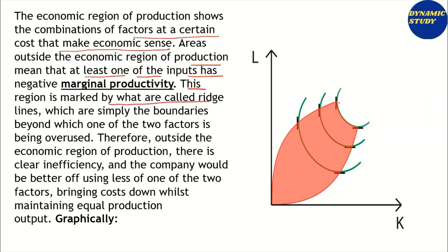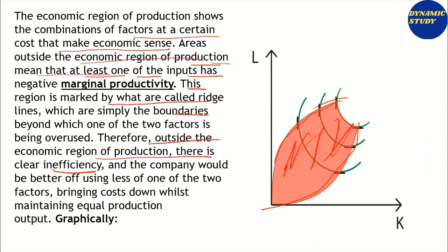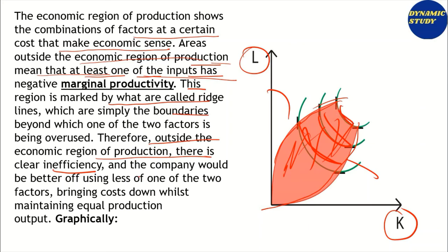The region is marked by ridge lines. These ridge lines basically set the boundary of what is the economic region of production. Outside the economic region of production, there is clear inefficiency because at least one input has negative marginal productivity outside the ridge lines. The downward-sloping portion of the isoquant falls within the economic region, so therefore outside the economic region there is clear inefficiency.